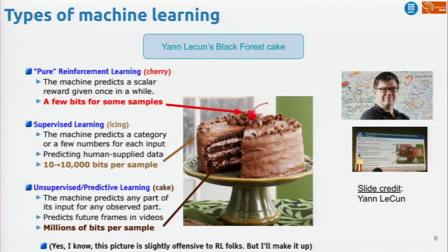That's the most famous cake in deep learning — a type called black forest. That's the cake that Yann LeCun uses when he starts many of his talks. He refers to different types of learning and how efficient they are in terms of data efficiency for learning.